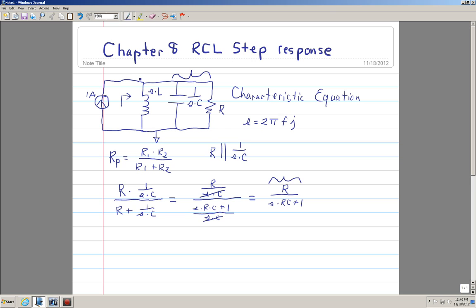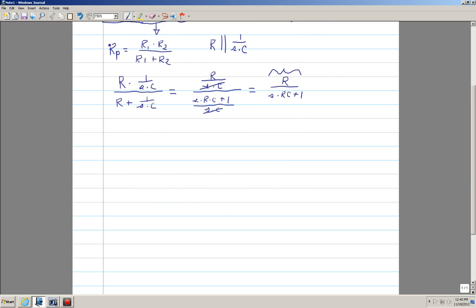So now we're going to add the inductor. And we basically do the same thing. So we're going to do the same thing over. So now we have R divided by S times RC plus 1.